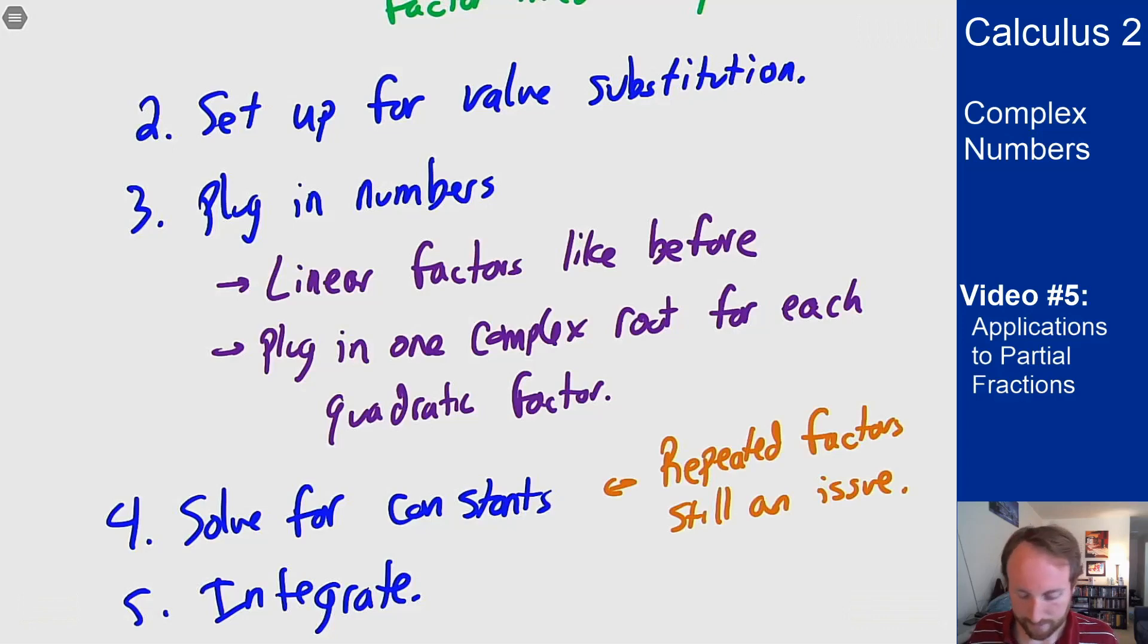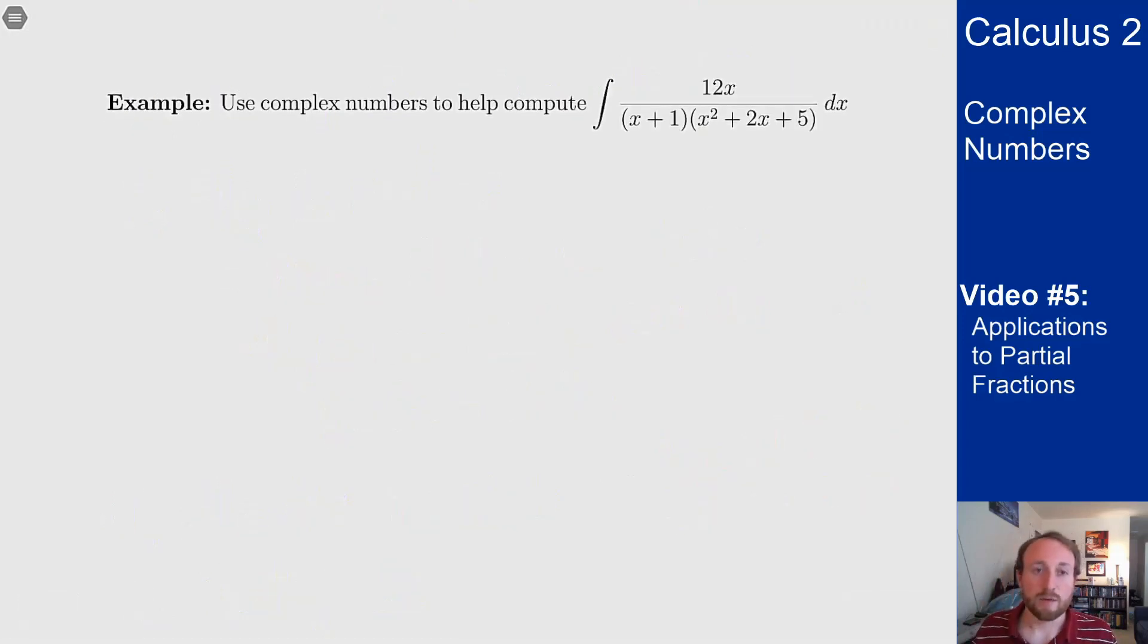Let's see an example what this might look like. So I want to use complex numbers to help compute the following integral, integral of 12x over (x+1)(x²+2x+5) dx. If you remember from stuff we've done before this here is an irreducible quadratic. Why is it irreducible?